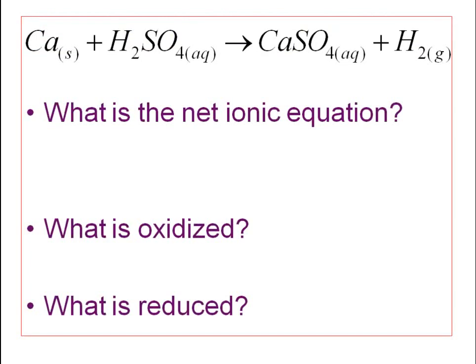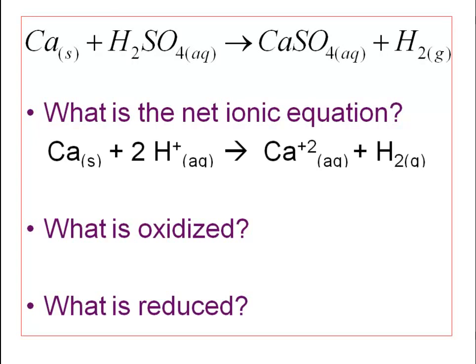Here's an example of a metal reacting with an acid. Calcium reacts with sulfuric acid to produce calcium sulfate and hydrogen gas — the calcium bonds with the sulfate ion, and hydrogen forms hydrogen gas. Writing the net ionic equation: calcium is a solid and stays solid; H₂ gas stays as a gas. Sulfuric acid and calcium sulfate are aqueous and ionize, so the sulfate ions cancel as spectator ions, leaving calcium ions and hydrogen ions.